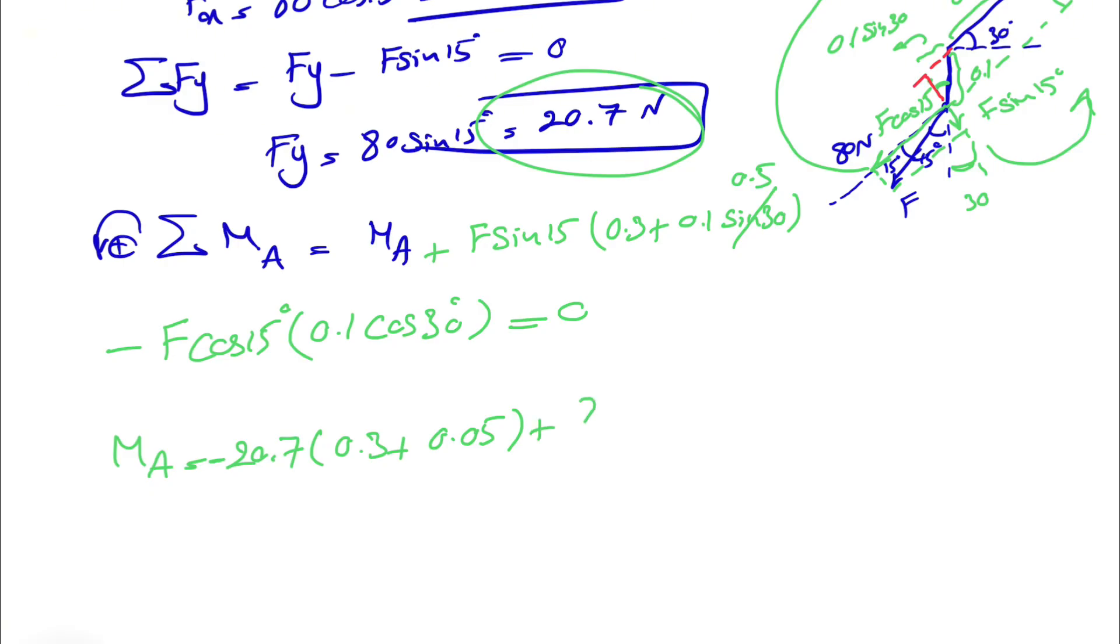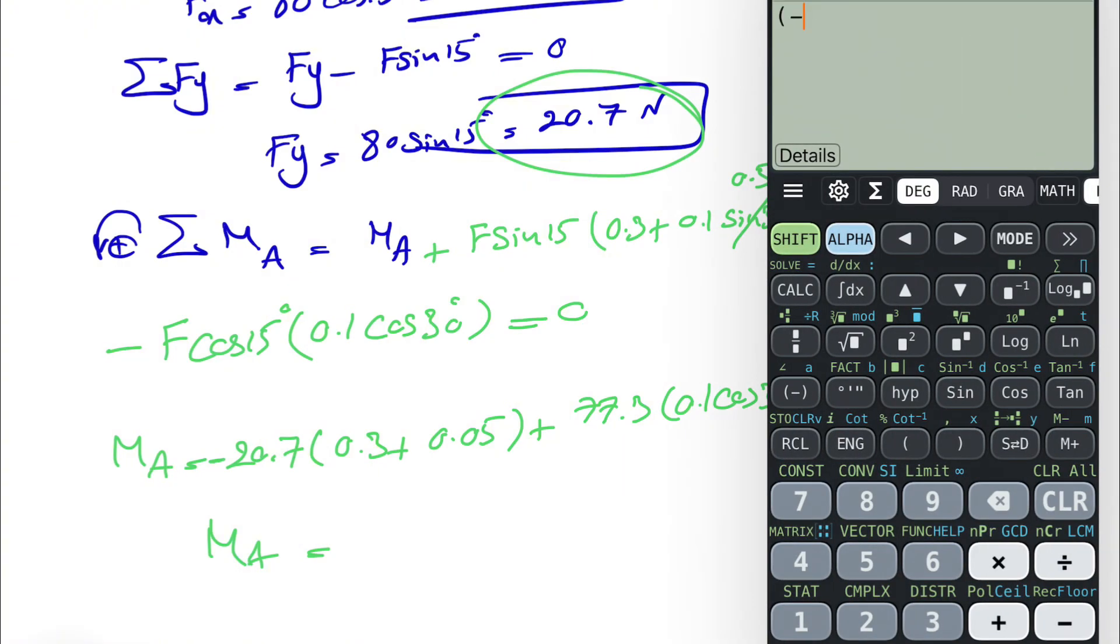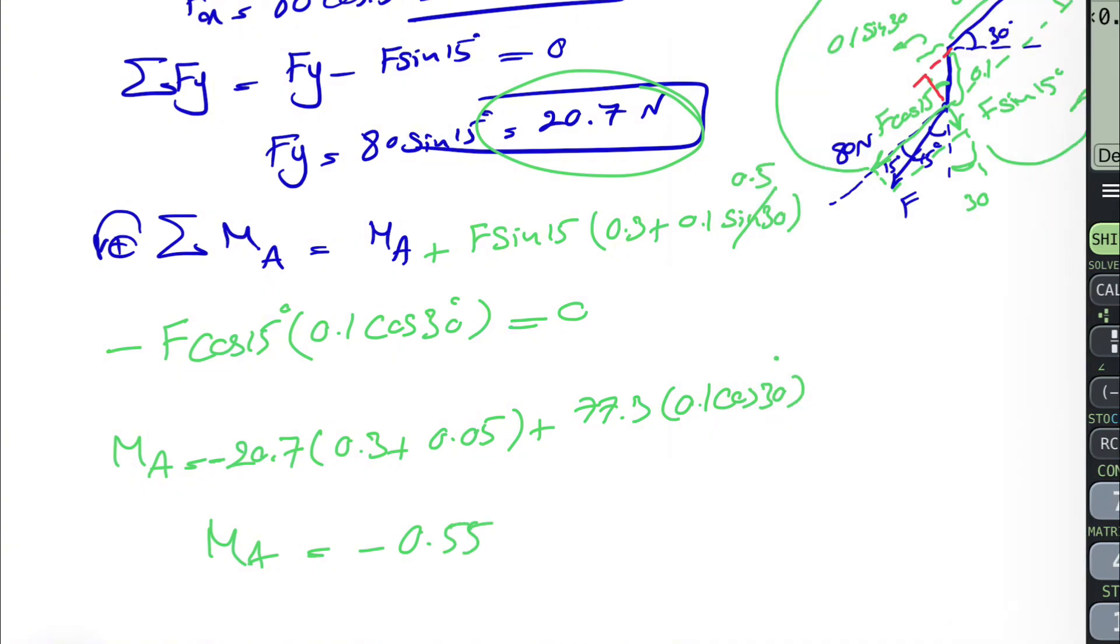Plus we have 77.3 times 0.1 cosine of 30 degrees. So minus 20.7 times 0.35 plus 77.3 times 0.1 times cosine of 30. This is going to be minus 0.55 Newton meter.